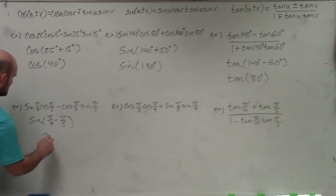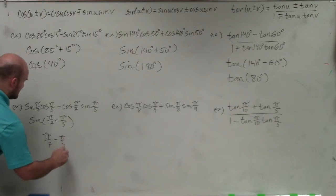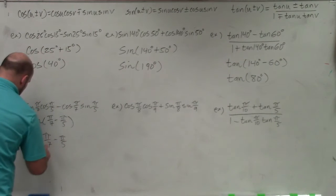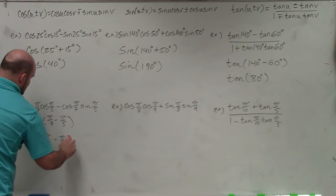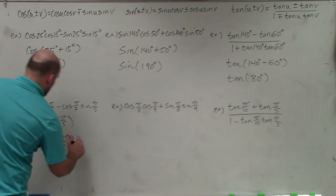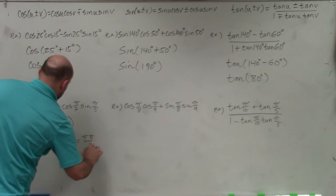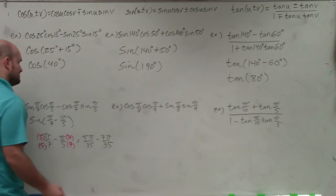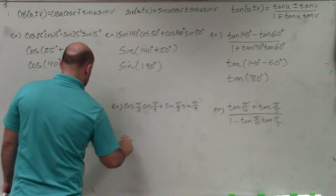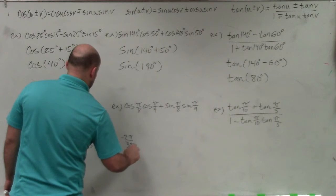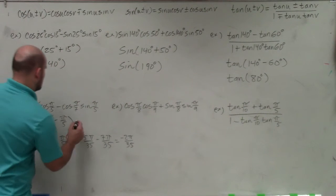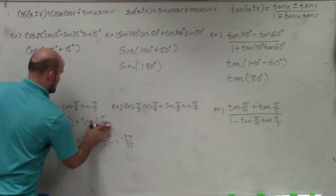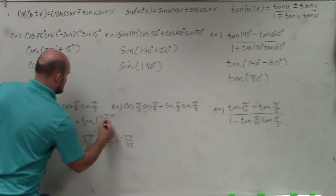To subtract these fractions, we need to get common denominators. The common denominator of 7 and 5 is 35. So I'll multiply pi over 7 by 5 over 5, and pi over 5 by 7 over 7. That gives me 5 pi over 35 minus 7 pi over 35, which equals negative 2 pi over 35. So I can rewrite this as the sine of negative 2 pi over 35.